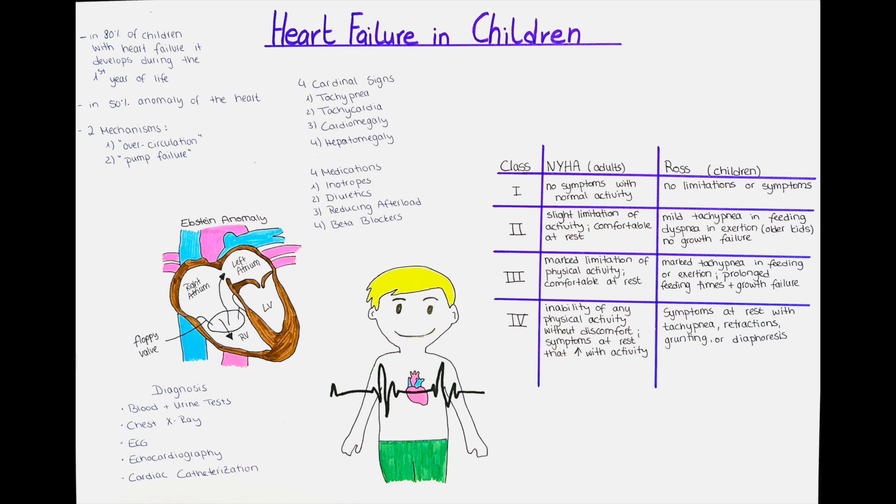Simply said, the problem is either an over-circulation — when the blood mixes inside the heart because of a congenital problem — or a pump failure when the heart cannot pump properly. So how do children with chronic heart failure present?